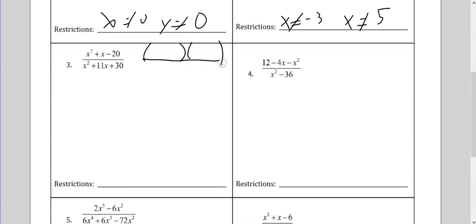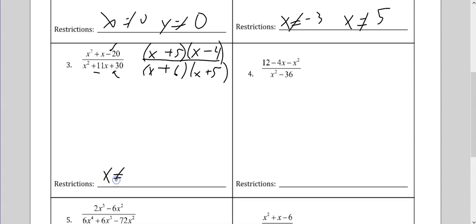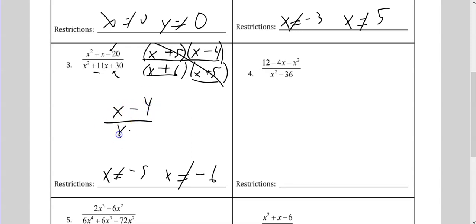Simple factoring here. Two numbers that multiply to give me 20 that differ by 1 — that's 5 and 4. I want more positives than negatives, so I have x plus 5, x minus 4 to give me 1x in the middle. On the bottom, I need two numbers that multiply to give me 30 that add or combine to 11 — that's 6 and 5, both positive. Do your restrictions first: x cannot be negative 5 and x cannot be negative 6. I get those by setting both equal to 0. Now I cancel my x plus 5s, leaving me x minus 4 over x plus 6.